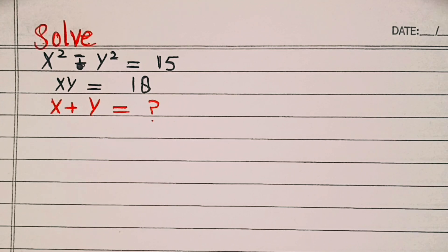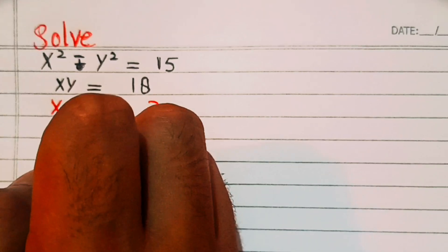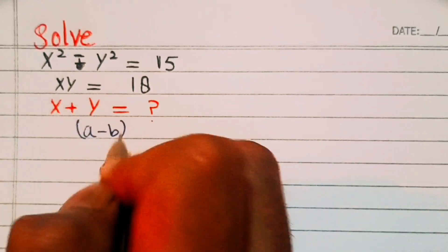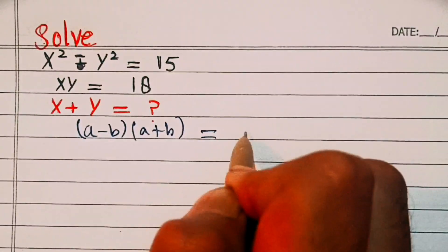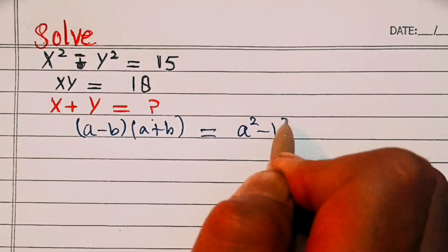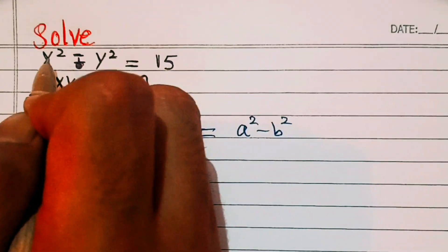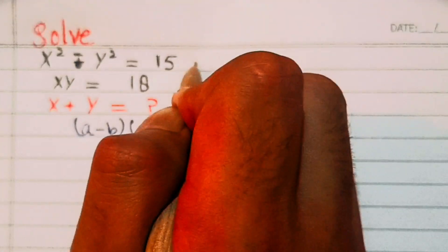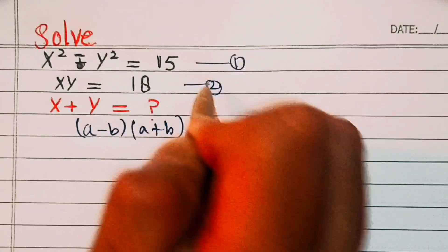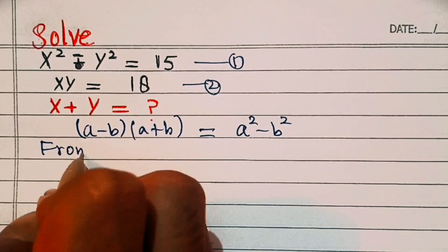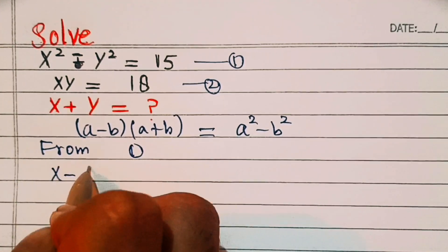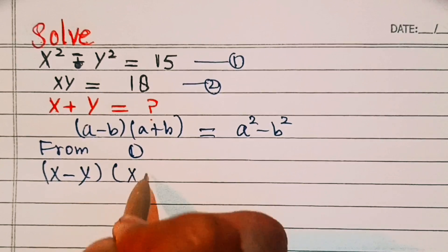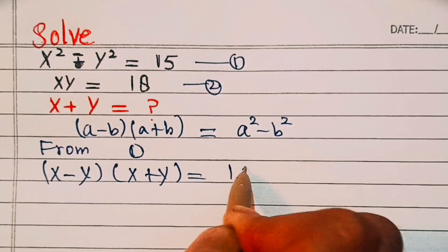First of all, we know that (a minus b) into (a plus b) equals a squared minus b squared. We'll apply this identity — calling the first equation 'first' and the second 'second'. So from the first equation, x squared minus y squared can be written as (x minus y) into (x plus y) equal to 15.